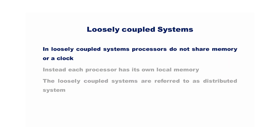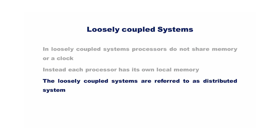In loosely coupled systems, processors do not share memory or a clock. Instead, each processor has its own local memory. Loosely coupled systems are referred to as distributed systems.